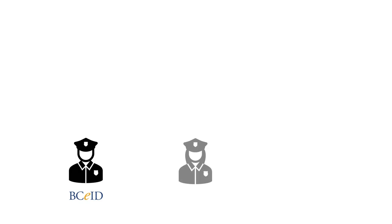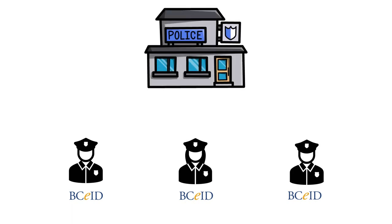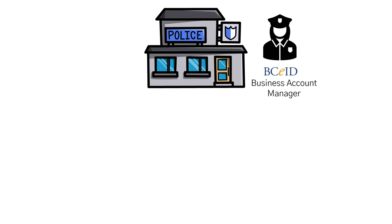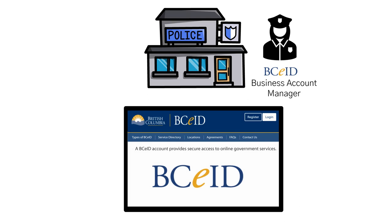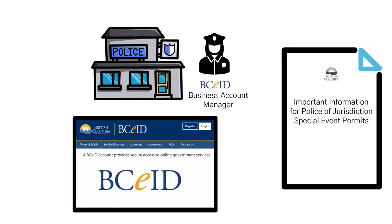To use the Online Licensing Portal, all users must have a Business BCEID login. Each police jurisdiction should identify one person to be the Business Account Manager, responsible for managing all BCEID credentials for their offices. If the police jurisdiction does not already have a Business BCEID account, the Business Account Manager will register for one on the BCEID website. For instructions about registering for BCEID, see the document titled Important Information for Police of Jurisdiction Special Event Permits.